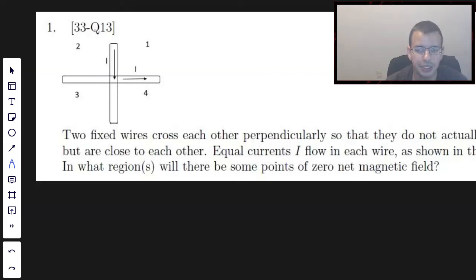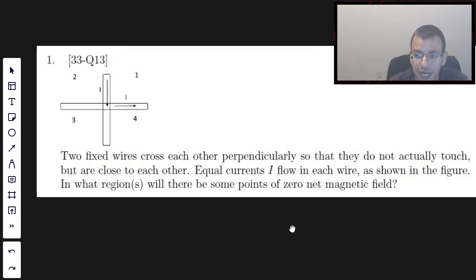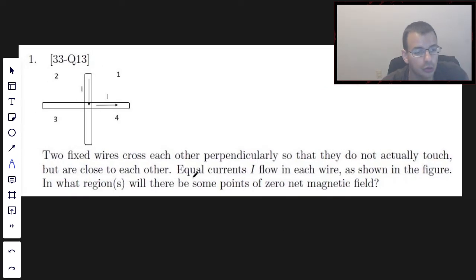Two fixed wires cross each other perpendicularly so that they do not actually touch, yet are close to each other. Equal currents I flow in each wire, as shown in the figure above. In what regions will there be some point of zero net magnetic field?